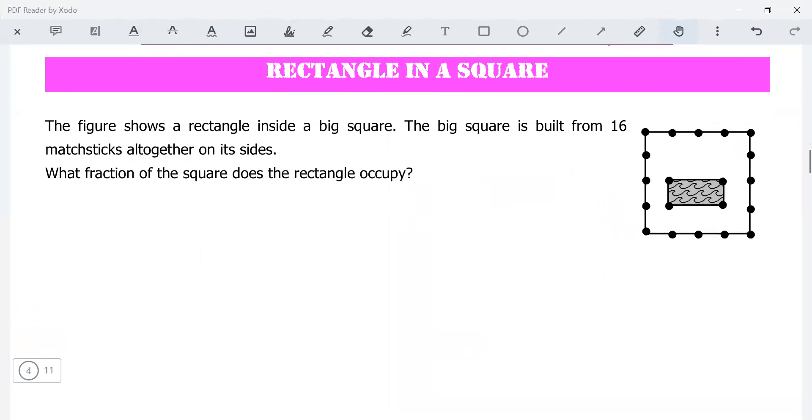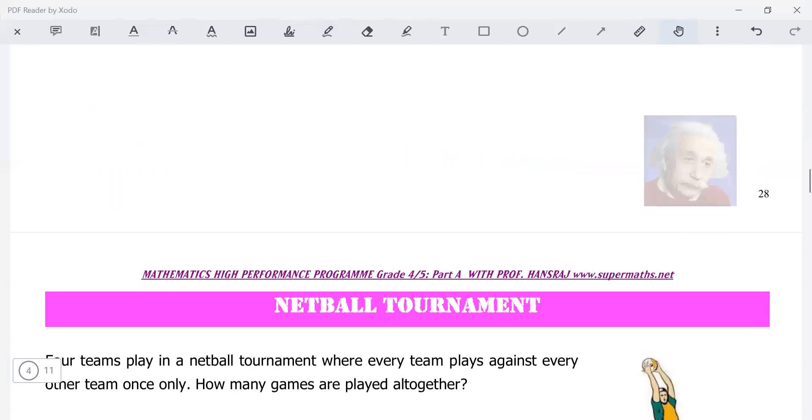Rectangles in a square. The figure shows a rectangle inside a big square. The big square is built from 16 matchsticks altogether on its sides. What fraction of the square does a rectangle occupy? What fraction? Is it one half, one quarter, one sixth? You've got to think through this, and a nice hint will be given to you in the lecture itself.